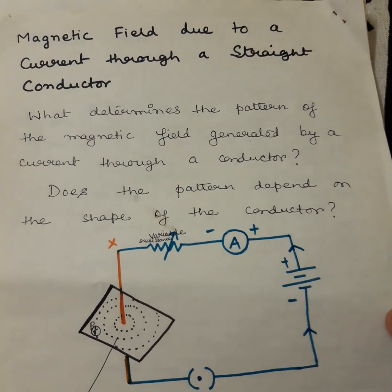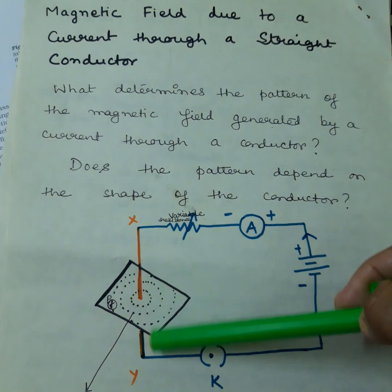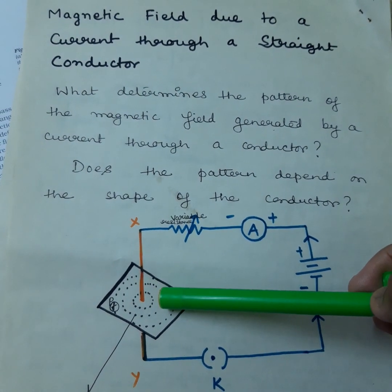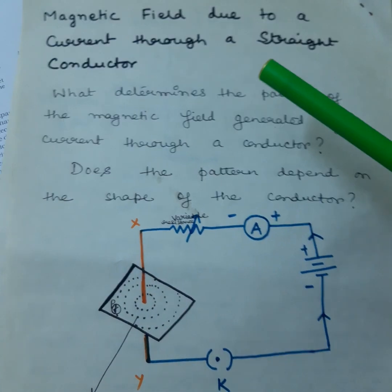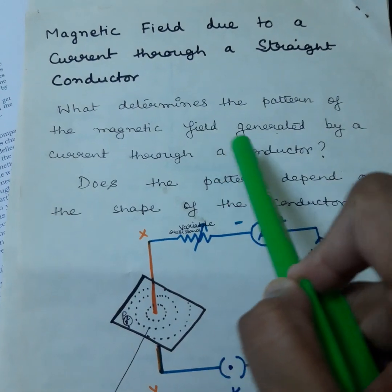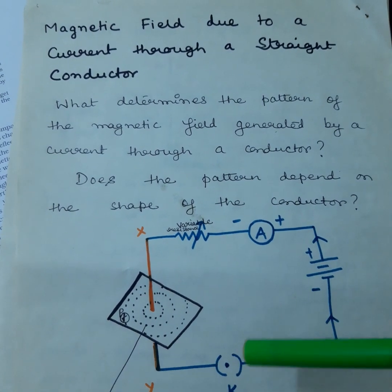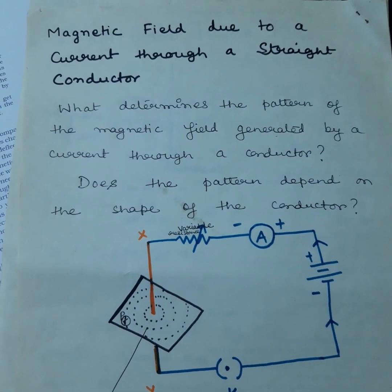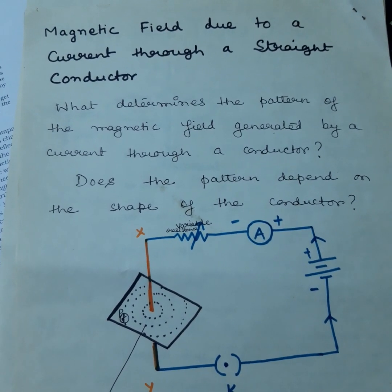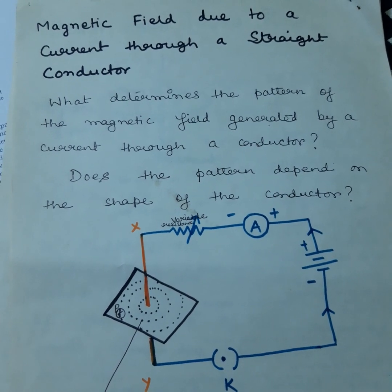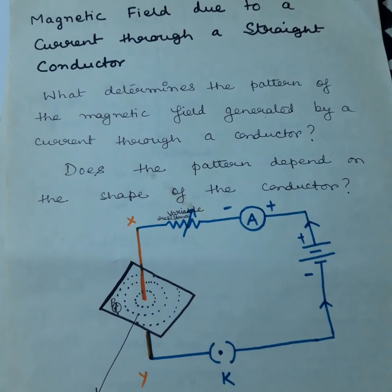You have already studied that any current-carrying conductor produces or generates a magnetic field around it. But what determines the pattern of the magnetic field generated by the current through a conductor? We already know that a strong magnetic field is being created around the current-carrying conductor, but what will be the pattern of that field? That we have to study through one experiment.